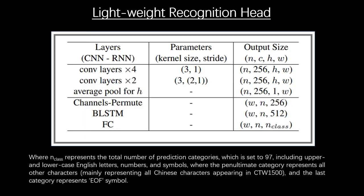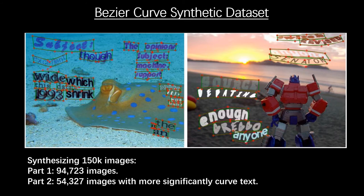Because the recognition part shares the features of the detection part, we only need to use a lighter structure. In addition, for end-to-end training, especially recognition, a large number of samples are required, so we also synthesize 150,000 synthetic pictures.